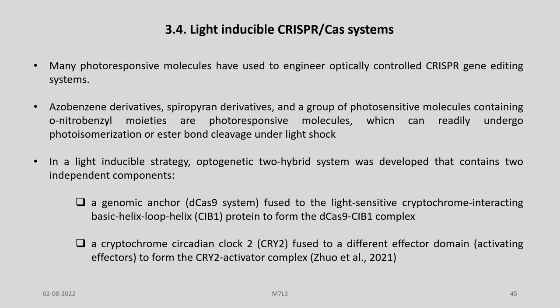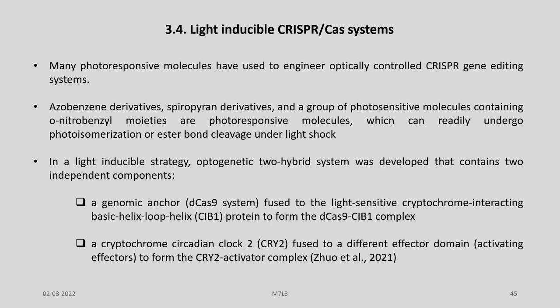One very interesting application of CRISPR-Cas9 is the development of light-inducible CRISPR-Cas9 systems. Many photo-responsive molecules have been used to engineer optically controlled CRISPR gene editing systems. Azobenzene derivatives, spiropyran derivatives, and photosensitive molecules containing O-nitrobenzyl moieties can readily undergo photoisomerization or ester bond cleavage under light. In one light-inducible strategy, an optogenetic two-hybrid system was developed containing two components: a genomic anchor — the D-Cas9 system fused to the light-sensitive cryptochrome-interacting basic helix-loop-helix CIB1 protein — and a cryptochrome circadian clock 2 (CRY2) fused with different effector domains.